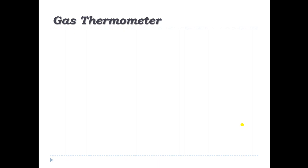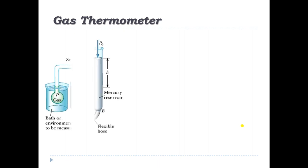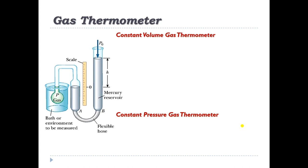Now we look at the different kinds of thermometers one by one. The first is the gas thermometer, of which there are two types: constant volume and constant pressure. A quantitative measurement of temperature requires a reference to some datum point or reference condition, established using a suitable temperature unit. Many temperature scales and reference points have been proposed. A schematic diagram of both constant volume and constant pressure gas thermometers is given. A small amount of gas is enclosed in a bulb.